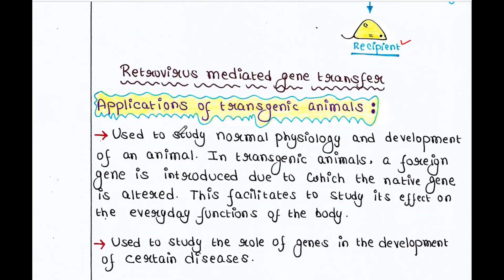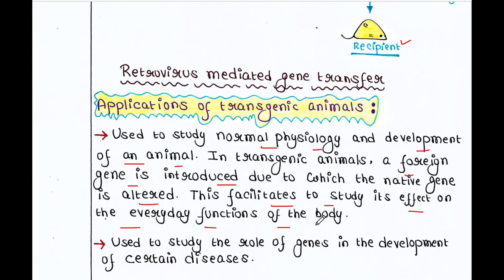Let's talk about the applications of transgenic animals. These are used to study the normal physiology and development of an animal. In transgenic animals a foreign gene is introduced, causing the native gene to be altered; this facilitates studying its effect on the everyday functions of the body — for example, how animal behavior is altered after inserting the new gene.